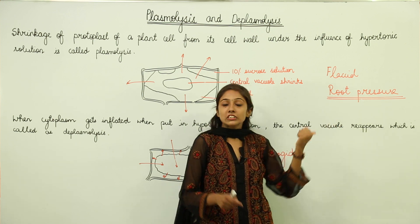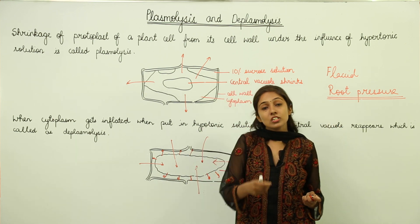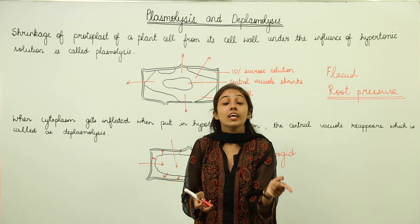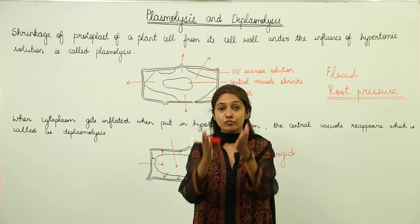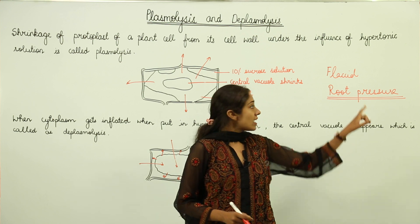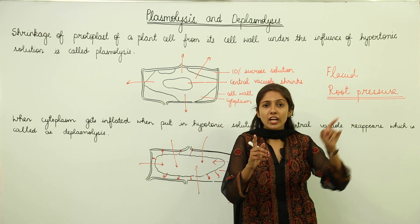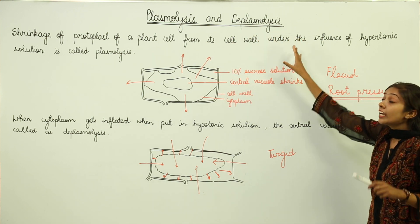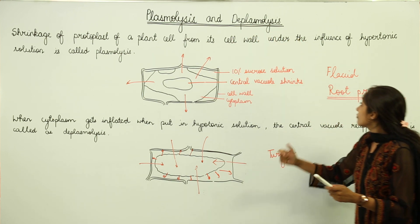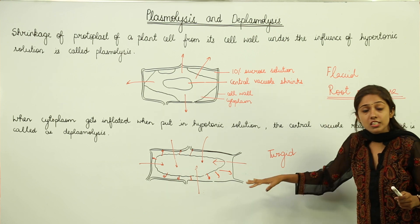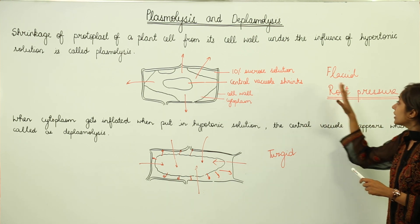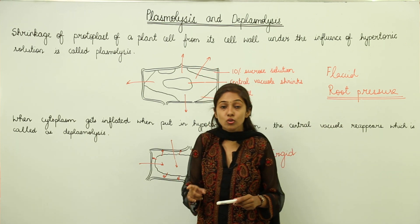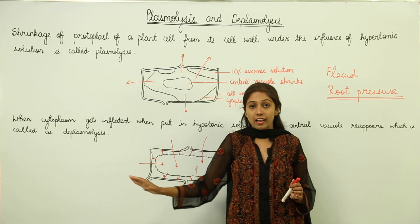Root pressure is the pressure exerted by the turgid cells of the root, because of which water moves upwards through the xylem. By understanding plasmolysis and deplasmolysis in detail, you are now familiar with flaccidity, turgidity, turgor pressure, and root pressure. Learn these definitions by heart — they are important.